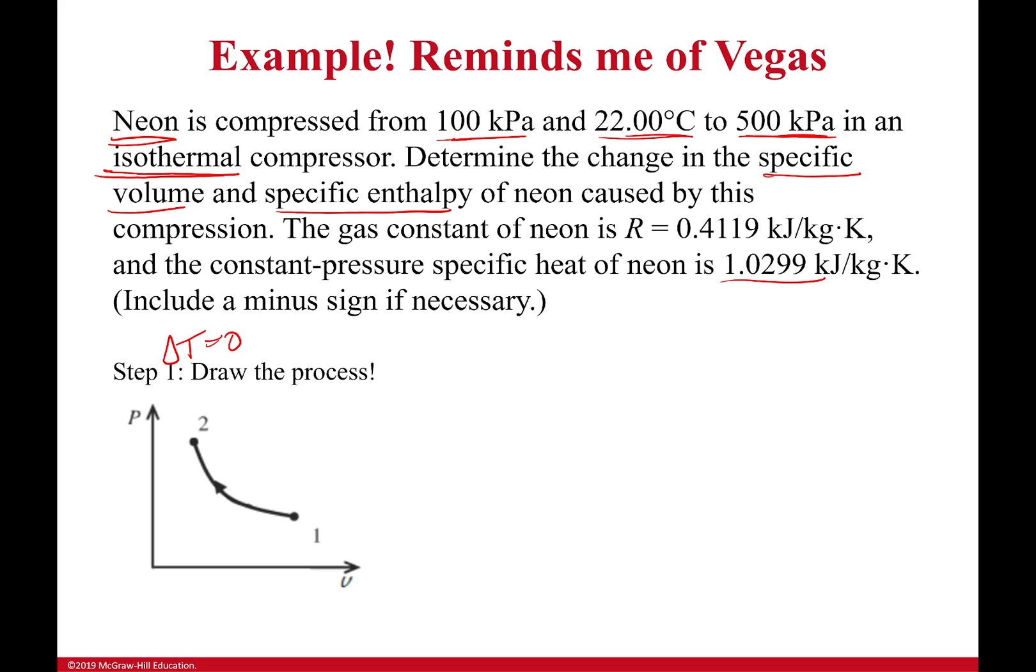First off we're going to draw the process. It's isothermal. Isothermal looks kind of like this on the PV diagram. It's a little bowed down. It actually does have a perfectly set shape depending on the gas. But I'm not grading you on having a perfectly accurate process diagram. Just know it bows down a little bit. It'll help you when you're trying to visualize these kinds of things.